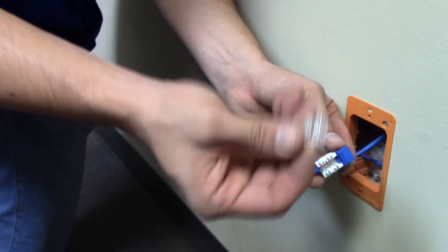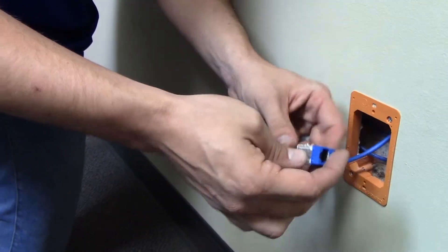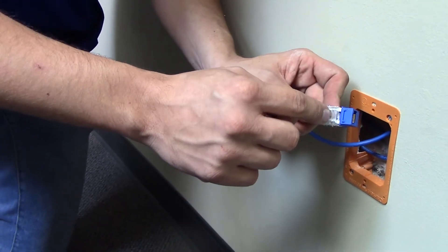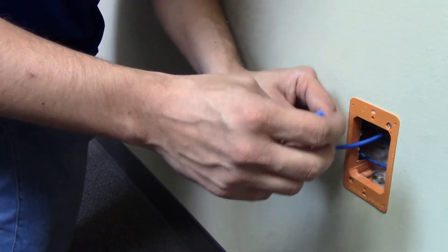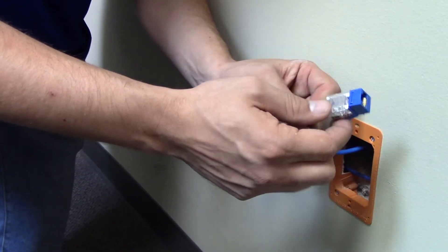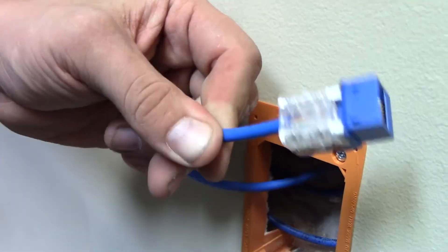Once terminated, use the dust cap that also comes with the jack. Pop it on. This helps to make sure each pair is securely in place as well as making sure that no dust or drywall get in there and cause issues with connectivity. So now your jack's fully terminated. The sheathing goes all the way up to the inside of the jack. Your pairs are twisted as little as possible. Everything's fully secured and the dust cap is on.